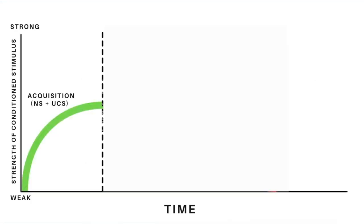Graphically, we can plot this acquisition process as shown on this graph, with increasing strength of the conditioned stimulus occurring during the conditioning process. The stimulus-response mapping between the neutral stimulus and the unconditioned stimulus tends to increase over time.